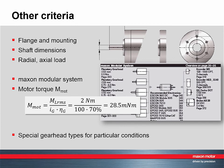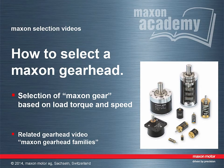Particular conditions require special gearhead types: sterilizable versions, gears with specially high torque or high input speed, heavy duty versions for high pressure, vibration, and temperature, or other gearheads. That's it — a short introduction to gearhead selection. In summary: first select the gearhead size and type according to the torque requirements. The matching reduction ratio is found by looking at the load speed and the maximum gearhead input speed. Good luck for your selection!